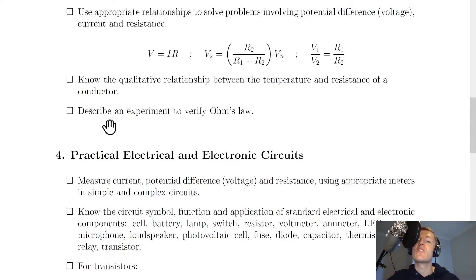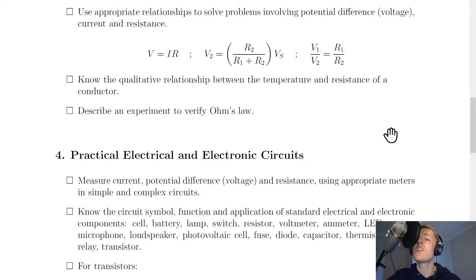Lastly for section three, you need to describe an experiment to verify Ohm's Law. This involves connecting up a simple circuit with a power supply, wires, and a resistor. You measure the current through the resistor and the voltage across it using an ammeter and a voltmeter respectively. For even steps in current, you record the voltage values, then plot a graph of voltage on the y-axis against current on the x-axis — you should get a straight line through the origin.